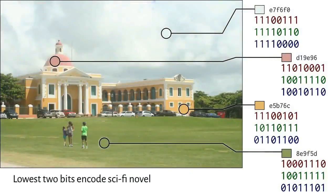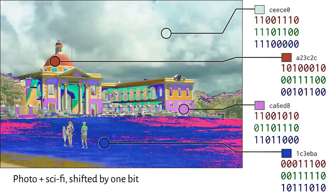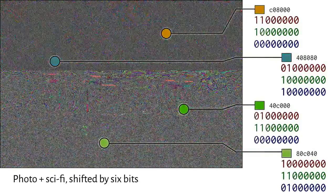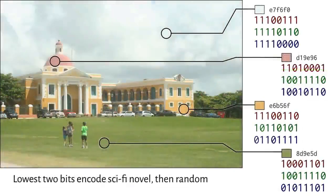Left shifting the image that conceals the sci-fi novel reveals that something funny is going on in those low order bits. There's a discontinuity between the encoded text and what remains of the original image. Maybe we can smooth out the discontinuity by substituting random bits once we run out of secret data.